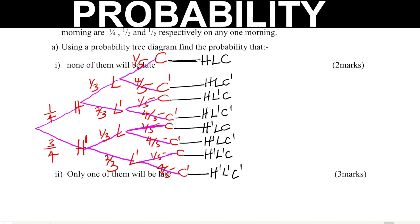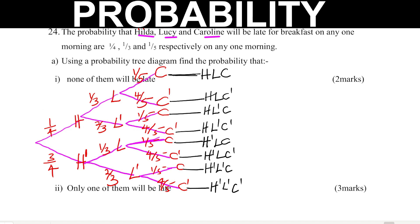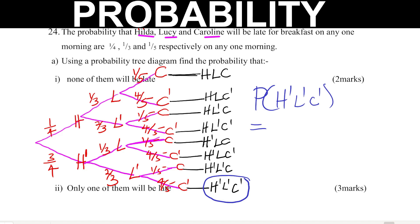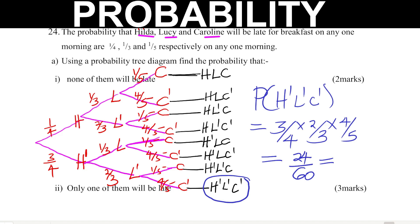Now we can answer the questions. The first one: none of them will be late. This is represented by the branch H prime, L prime, C prime. The probability is 3/4 × 2/3 × 4/5, which gives 24/60. When you simplify, you get 2/5. That is how you work out the first part — none of them will be late.